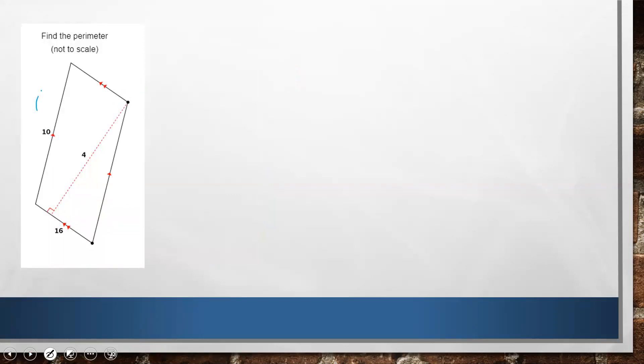This one asking for perimeter again, so that's that distance all the way around. We don't care about the 4, that's my height. So we'll have 2 times 10 plus 2 times 16, which is 20 plus 32, which is 52. That's all for area and perimeter of parallelograms.